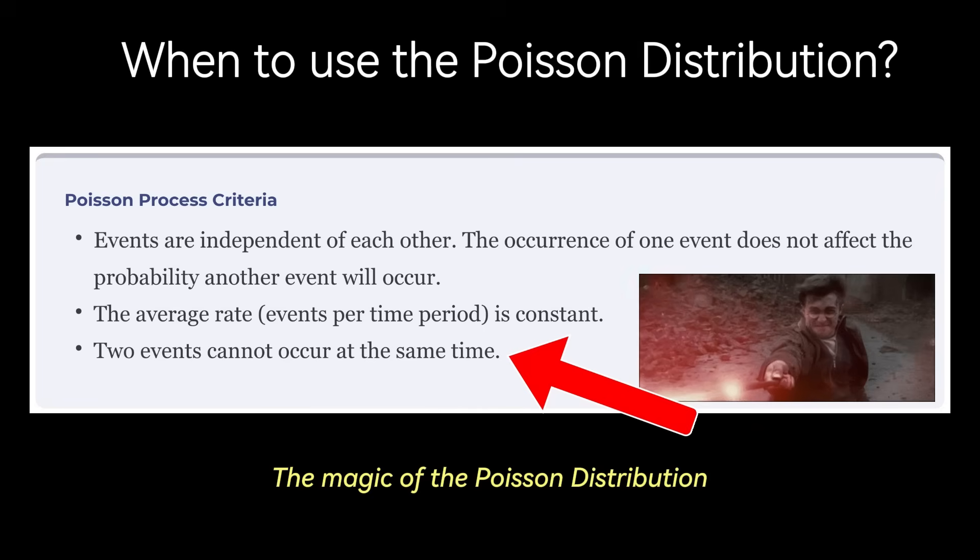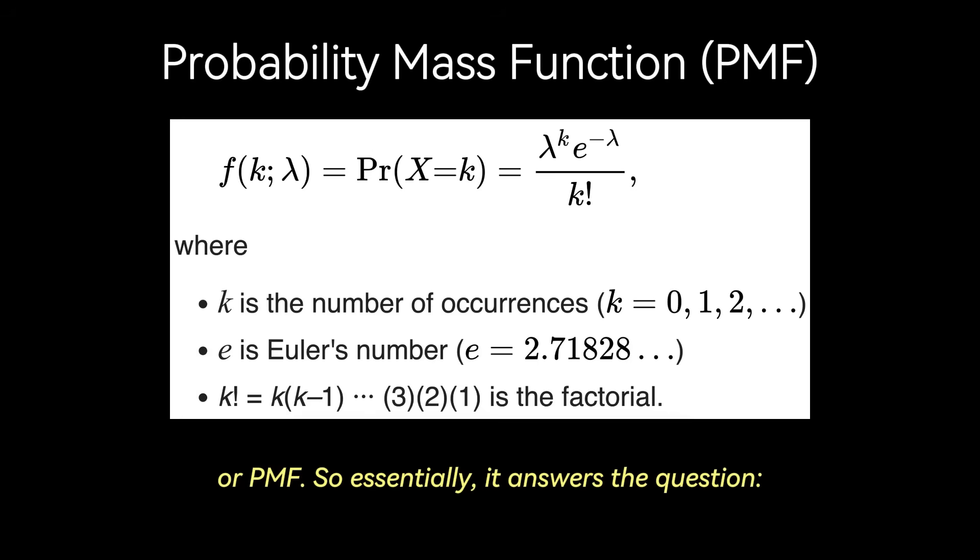The magic of the Poisson distribution lies in its formula, known as the probability mass function, or PMF. So essentially it answers the question, if events happen randomly at a certain average rate, what is the likelihood of observing exactly k of these events within a defined window? Its core function is to quantify the randomness associated with events that occur independently and at a constant average rate. By calculating these probabilities, we can predict the likelihood of different event counts. For example, determine how probable it is to observe 0, 1, or 2, or any other number of events.